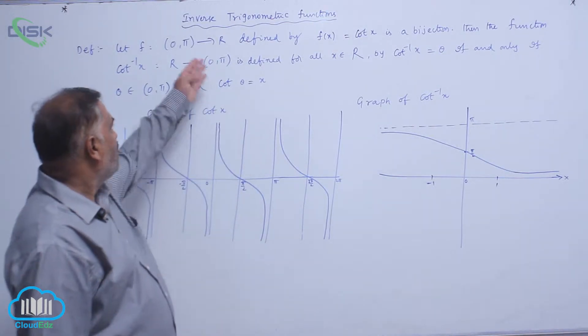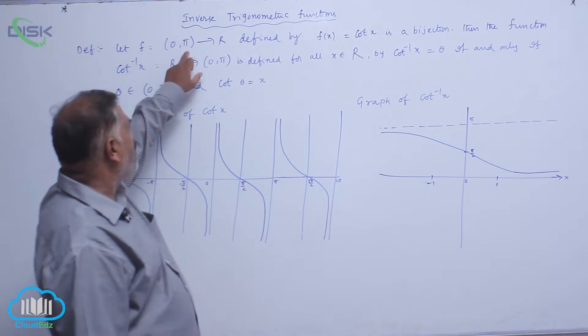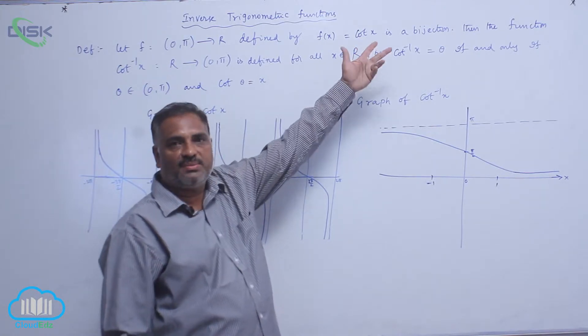We now discuss the inverse function of cot x. Basically, f: (0,π) → R defined by f(x) = cot x is a bijective function.